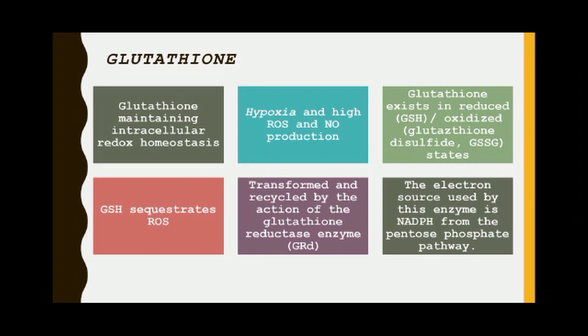In its reduced state, GSH sequesters ROS, which is then transformed and recycled by the action of glutathione reductase (GRD). The electron source for this enzyme is NADPH, which is mainly derived from the pentose phosphate pathway.